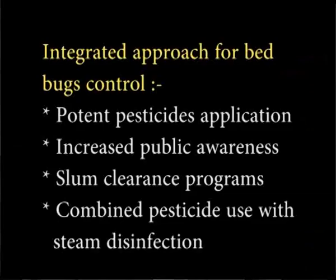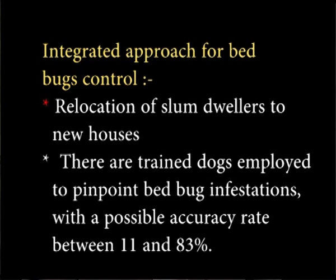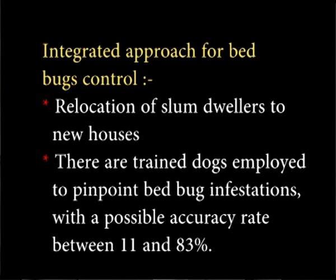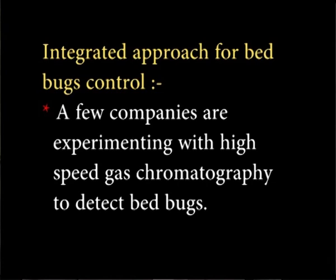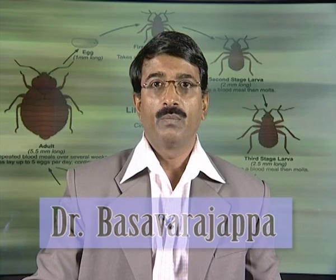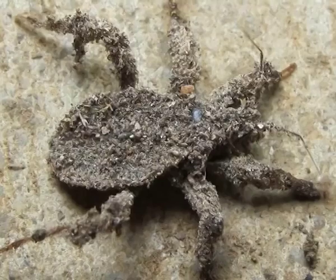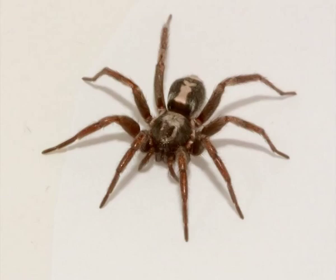Integrated approach: The bed bug population can be controlled effectively by following an integrated approach that includes potent pesticide application, increased public awareness, slum clearance programs, combined pesticide use with steam disinfection, and relocation of slum dwellers to new houses. Trained dogs are employed to pinpoint bed bug infestations with an accuracy rate between 11 and 83 percent. A few companies are experimenting with high-speed gas chromatography to detect bed bugs. Control of bed bugs frequently requires a combination of non-pesticide approaches and the occasional use of pesticides. Natural enemies of bed bugs include the masked hunter insect (commonly known as masked bed bug hunter), cockroaches, ants, spiders, mites and centipedes.